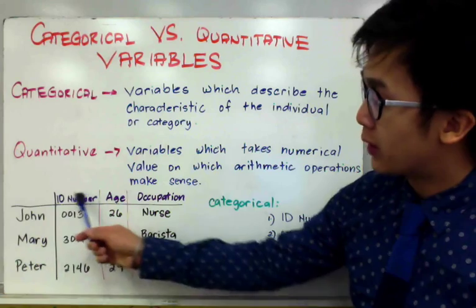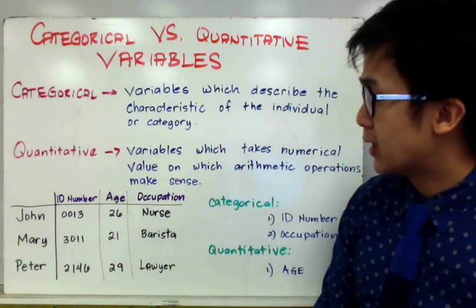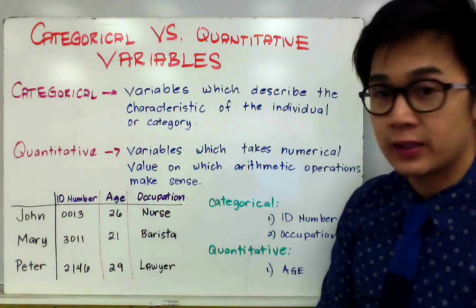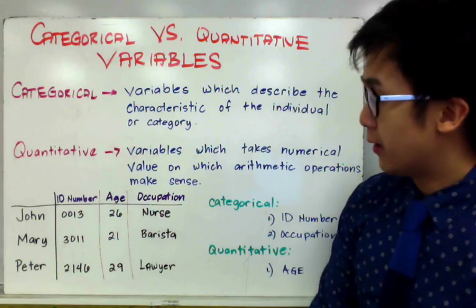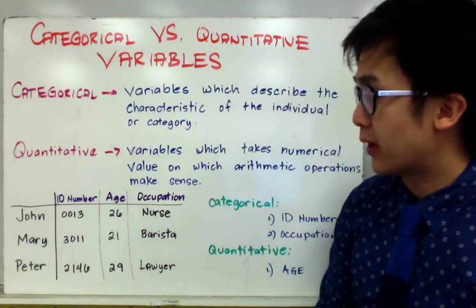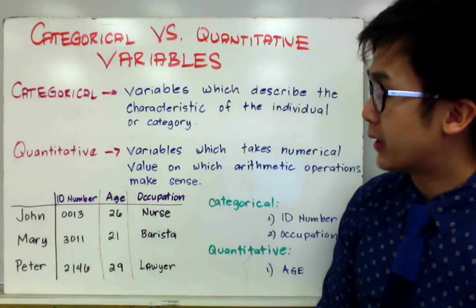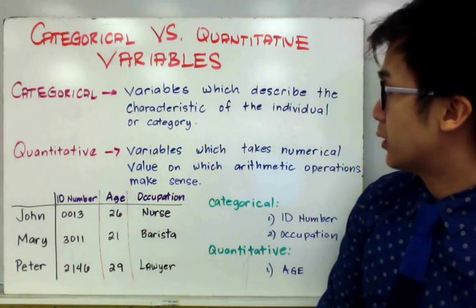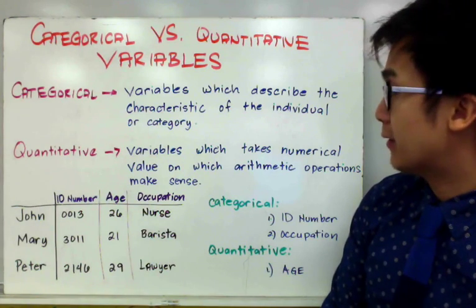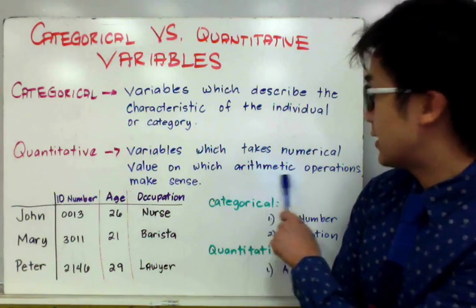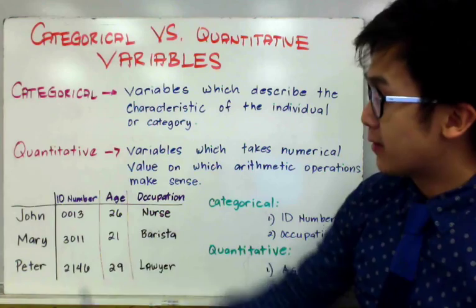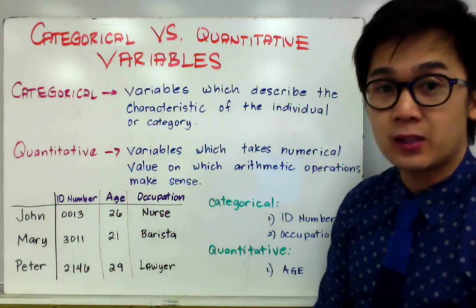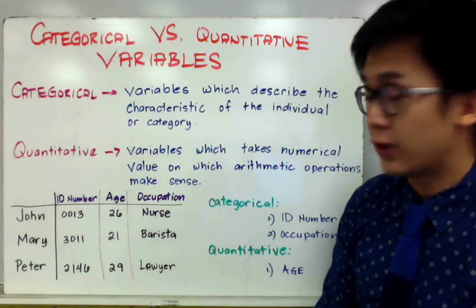I'm pretty sure some of you are wondering why the ID number is not considered to be quantitative, even though they are basically representing numerical values. The reason is because in the definition, according to the quantitative variable, this variable should take numerical value on which arithmetic operation makes sense.